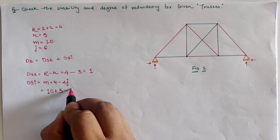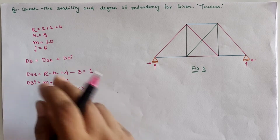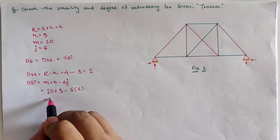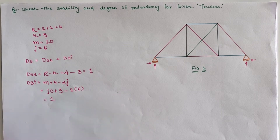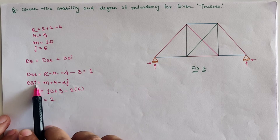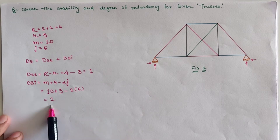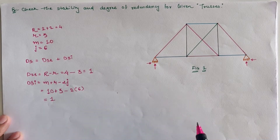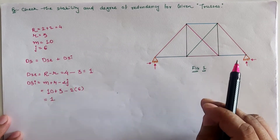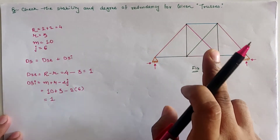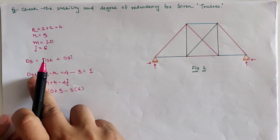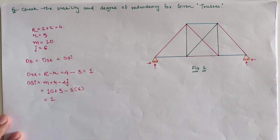Solving for DSI: m = 10, r = 3, j = 6, giving 10 + 3 − 2×6 = 1. So the internal static indeterminacy is 1, which means we have to take one member as redundant. The degree of redundancy for this truss is 1 for external as well as internal.